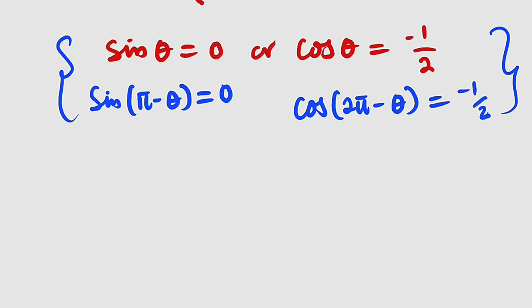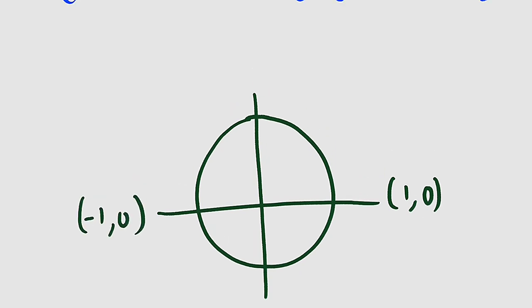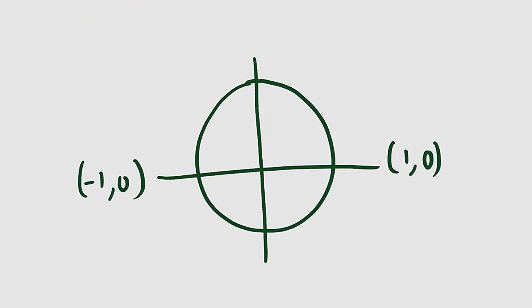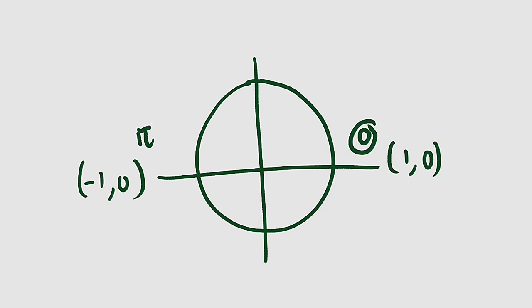Let me draw a unit circle. Here we have coordinates (1, 0) and (−1, 0). Sine depends on the y-axis, and we have zero at two points. The angle here is 0 and this one is π. So at 0 and π we have zero, because sine of 0 is zero and sine of π is also zero.